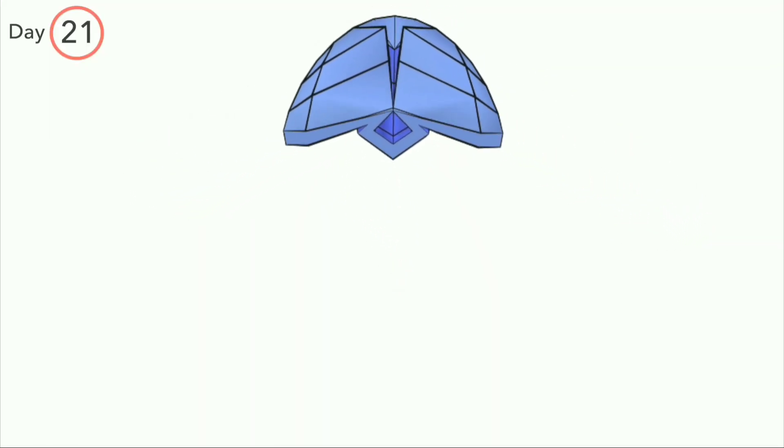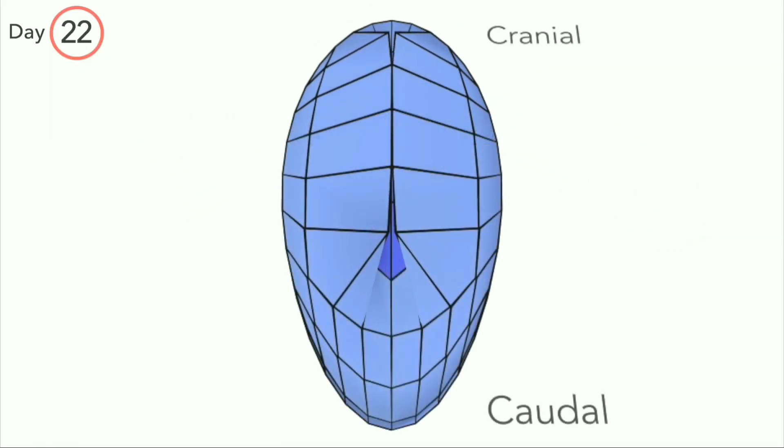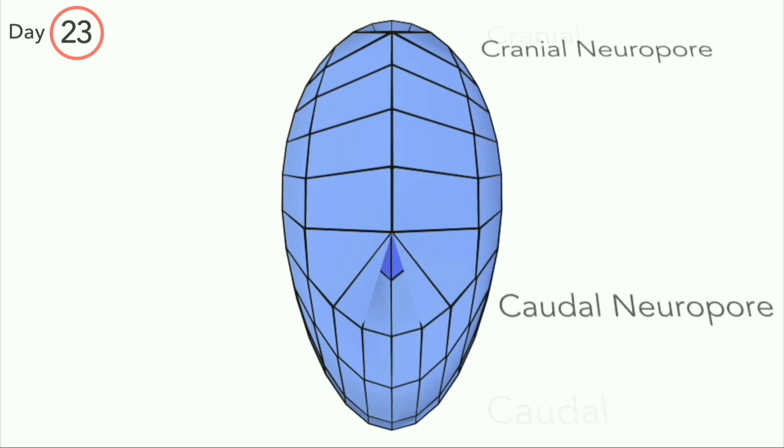Fusion then continues synchronously towards the cranial and caudal ends. At both ends, there is an unfused region named the anterior or cranial neuropore, and the posterior or caudal neuropore.